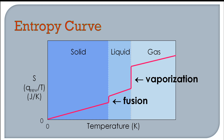This variation in entropy is shown for different phases of matter. On the y-axis is entropy in joules per kelvin, and on the x-axis is temperature. As temperature increases and the substance changes phase from solid to liquid to gas, entropy continuously increases. There is a sudden, larger increase in entropy during vaporization compared to the solid-to-liquid transformation.